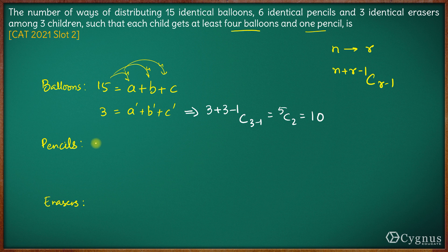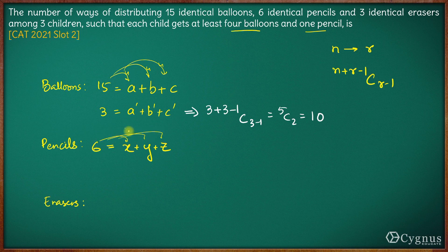Next is pencils. We have a total of 6 identical pencils which have to be distributed amongst 3 children. So let us say each child gets X, Y and Z number of pencils, so X plus Y plus Z equals 6. Now each child has to get at least one pencil. So if we distribute one pencil to each child, we will have 3 pencils remaining. And these 3 pencils can be distributed in any fashion — each child gets X dash, Y dash and Z dash pencils.